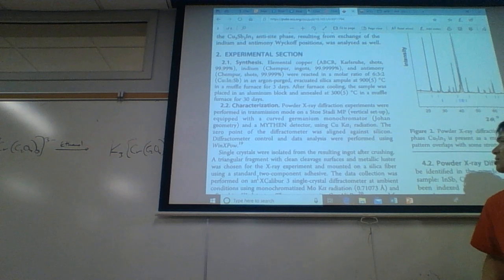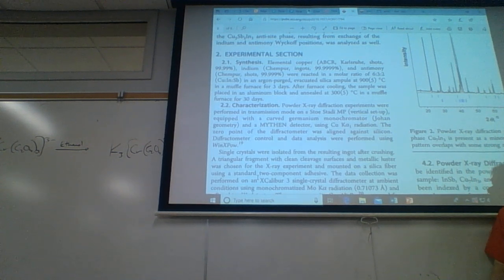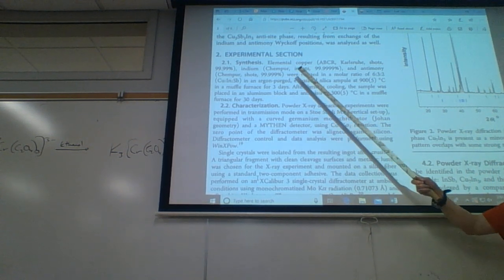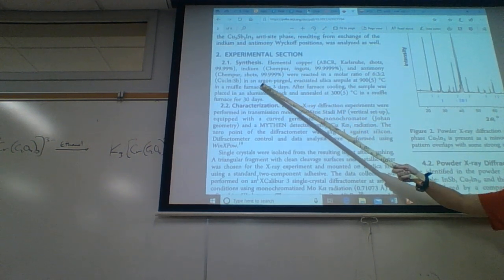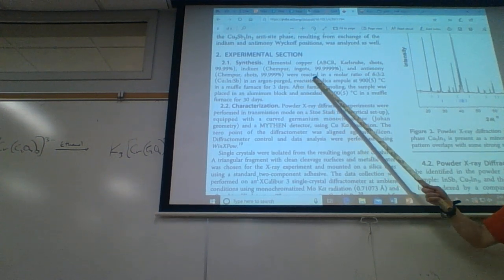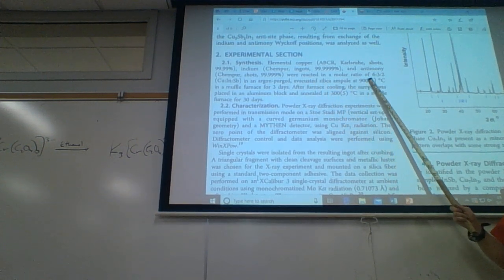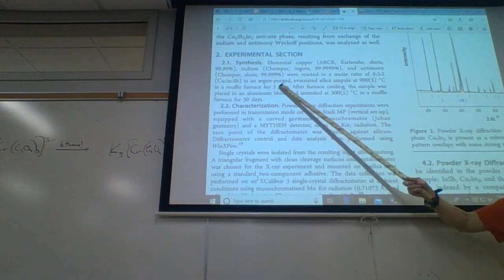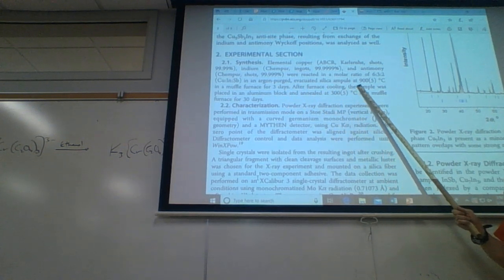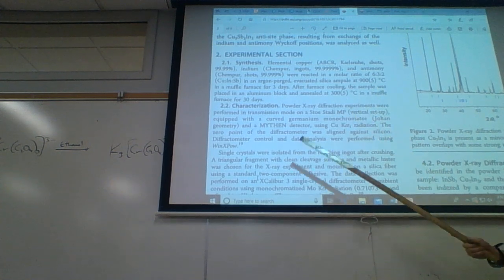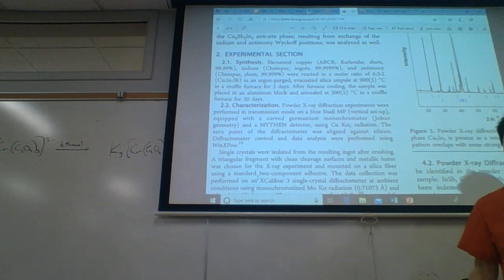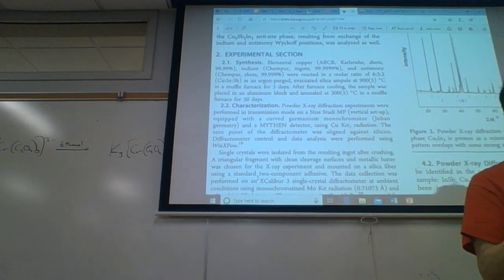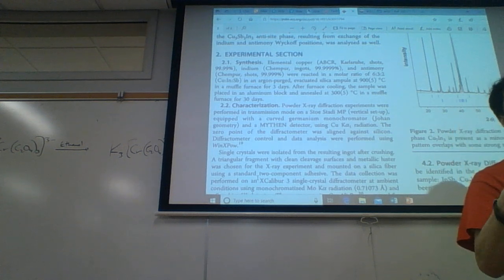When you buy chemicals you get a chemical analysis sheet telling you what the major impurities are — you look it over and make sure those impurities won't screw up your experiment. Basically they mixed copper, indium, and antimony and reacted them in a molar ratio of 6 to 3 to 2 in an argon-purged evacuated silica ampoule at 900 degrees C. They're telling you what they did — not what to do — so all of this is past tense.